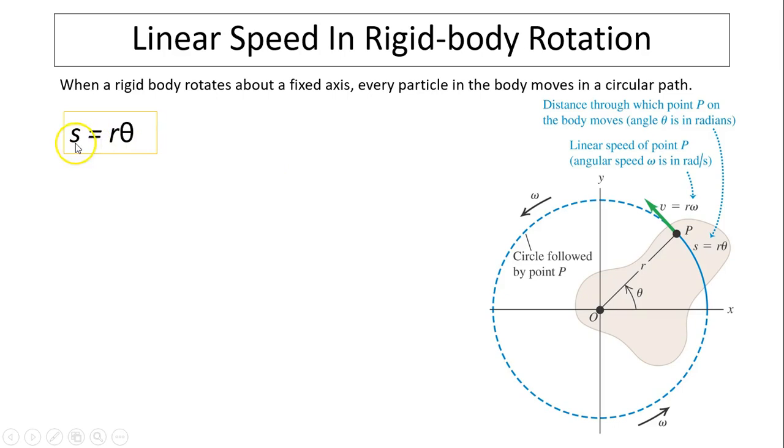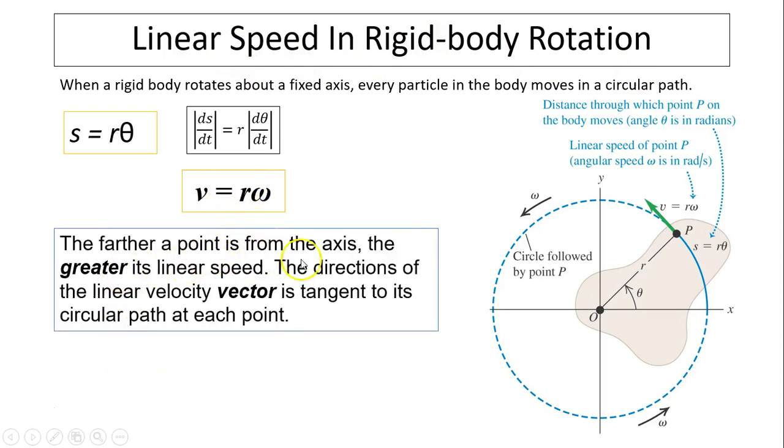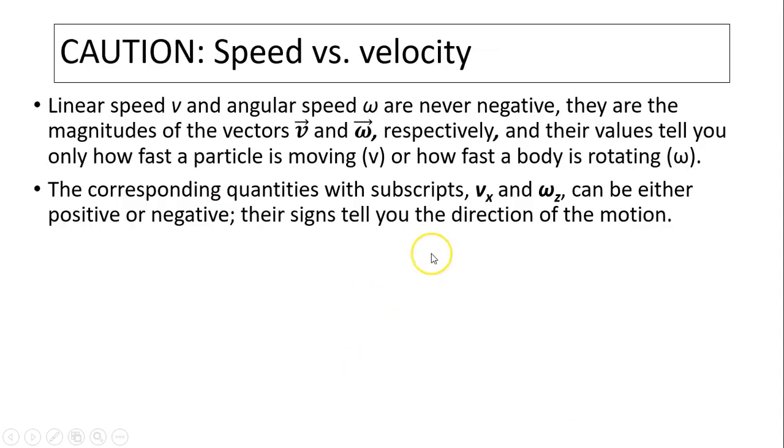Now if theta is changing and S is changing, we can do derivatives. dS/dt is the same as R times dθ/dt because R doesn't change. dS/dt is your v, and dθ/dt is omega. This is how v relates to omega. Linear speed relates to angular speed. So the further a point is from the axis, the greater its linear speed is. The direction of the linear velocity is always tangent to the circular path at each point.